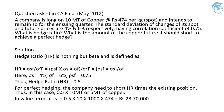That is something which is being provided to us as a spot price, and the company intends to remain so for the ensuing quarter as well. The standard deviation of changes of its spot and future prices are 4% and 6% respectively. They are having a correlation coefficient of 0.75. We are expected to provide them the hedge ratio, and the question is also asking us what amount of copper futures the company should short to achieve a perfect hedge. These are the two sub-questions incorporated in this one question asked in the CA Final examination for May 2012.